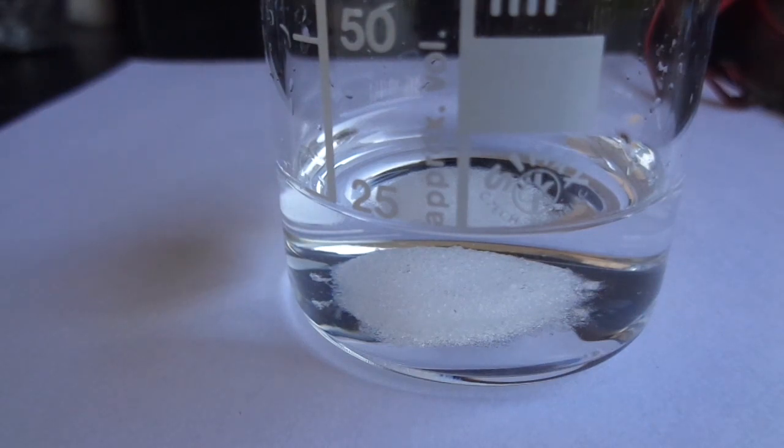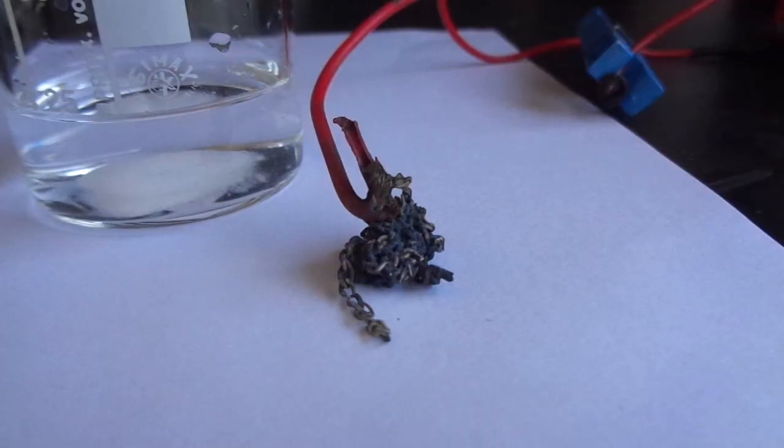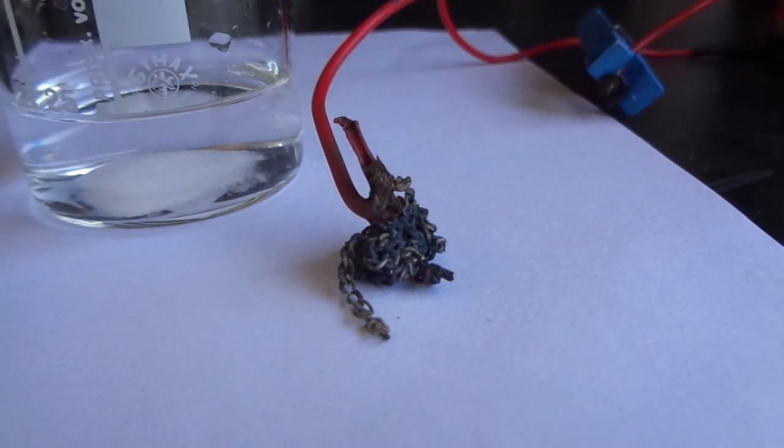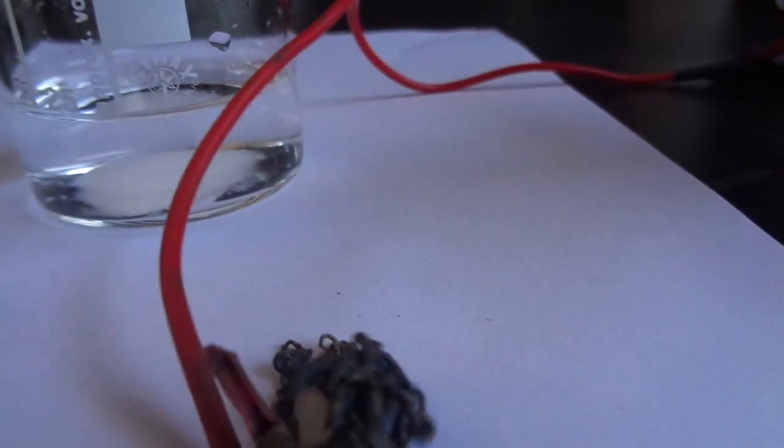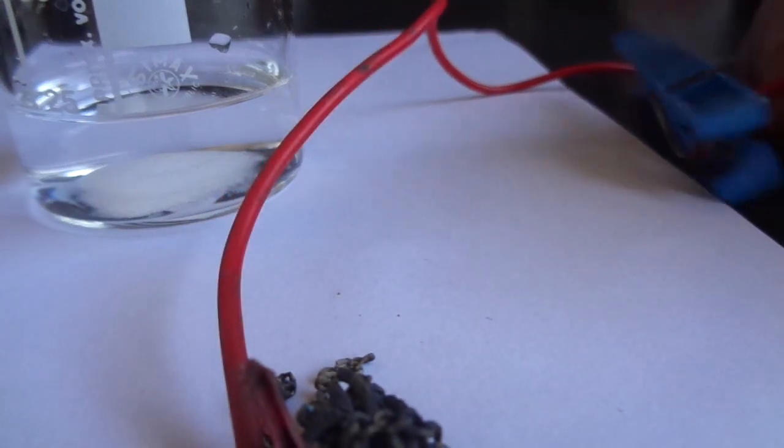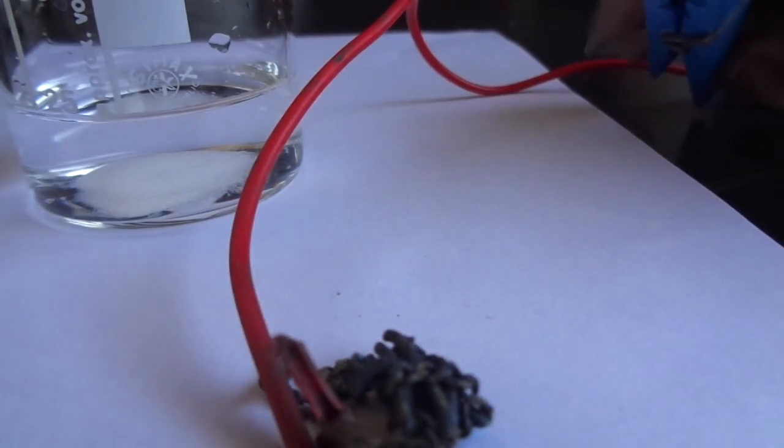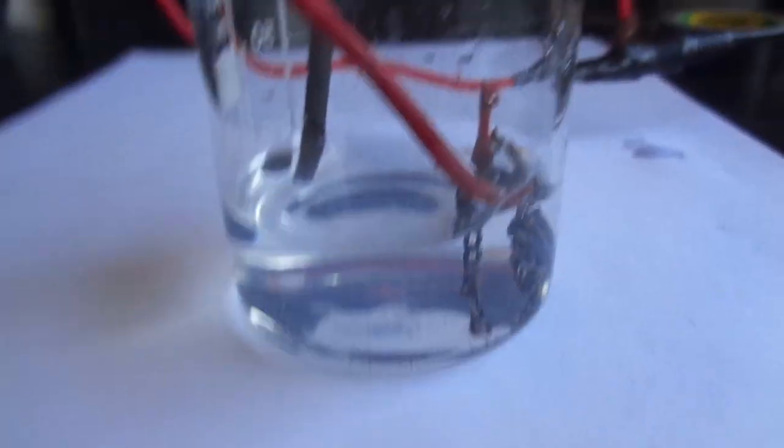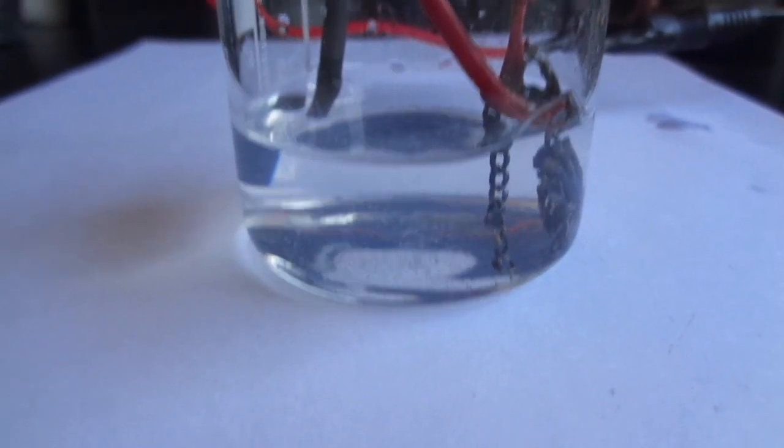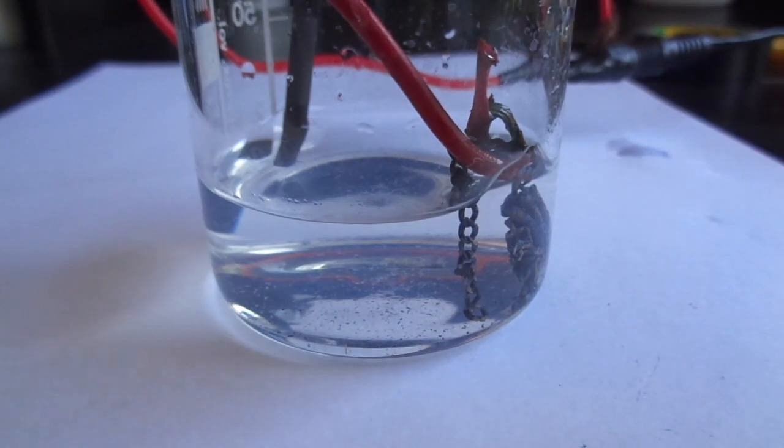The scrap silver has to be at the anode, so it has to be hooked up to the positive terminal. The carbon or copper electrode has to be cathode and it has to be hooked up to the negative terminal. Let me get this all set up and now let's turn on the power supply.